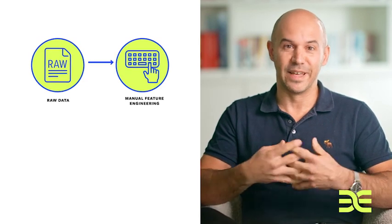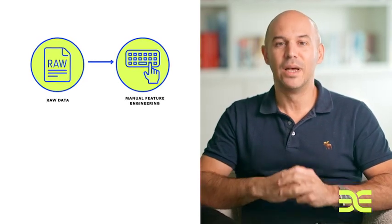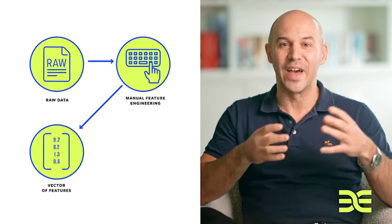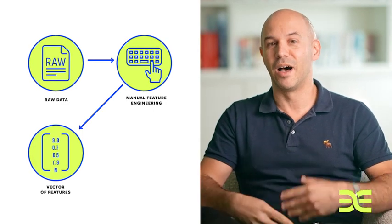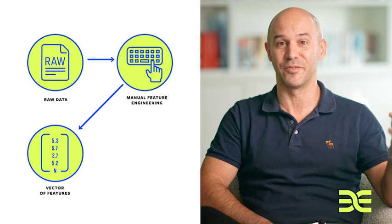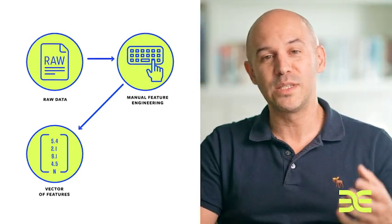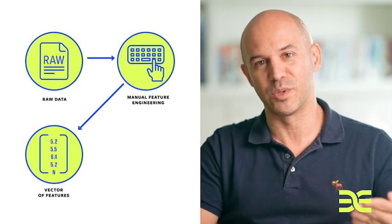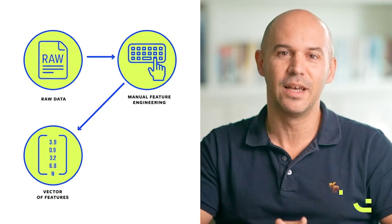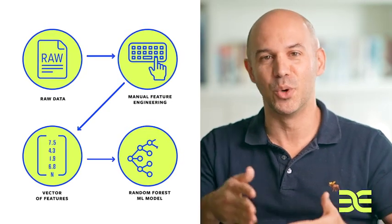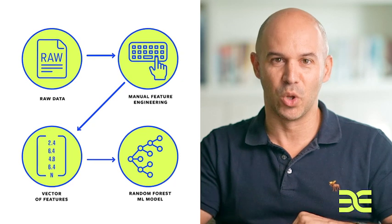Then, once those are identified, we would need to extract those features from the data, quantize them — meaning digitize them somehow — and then input those into a vector of features. That vector of features is a representation of those most important features and characteristics of each sample of the data. Once we've extracted all the features from all data samples, we can take the collection of vectors and feed those into the machine learning model of our choice.